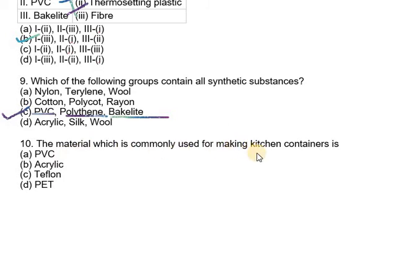It is actually used in making kitchen containers and a range of bottles. We have containers because it is actually transparent, strong, safe, and versatile. Therefore we have PET which is used commonly in making kitchen containers.